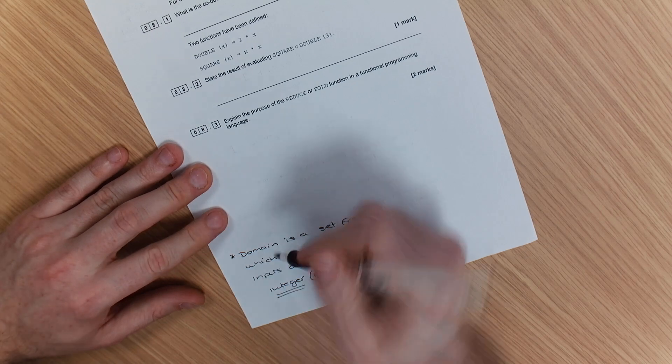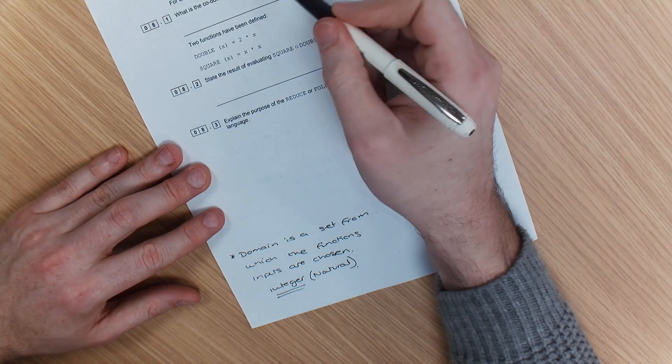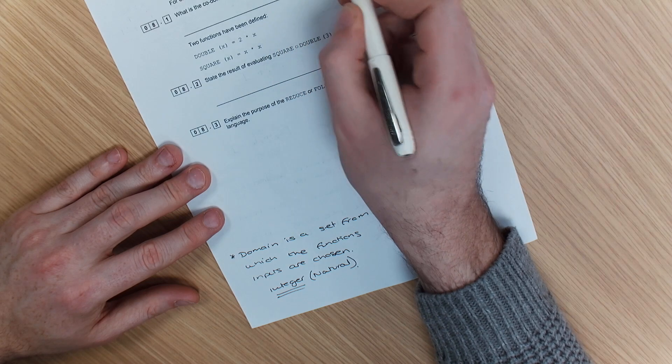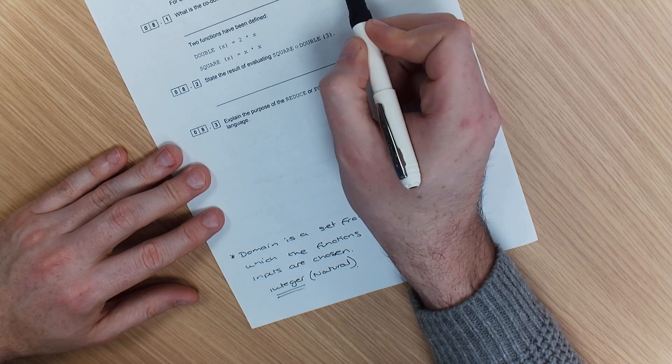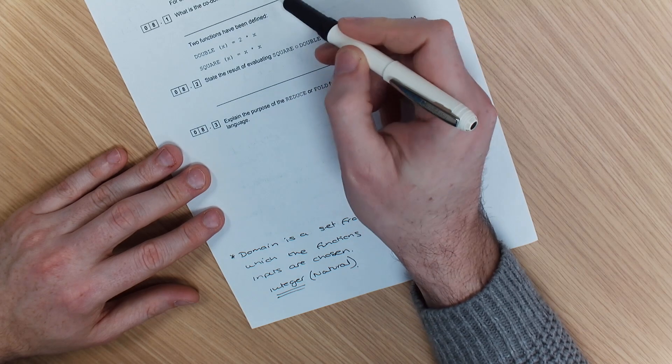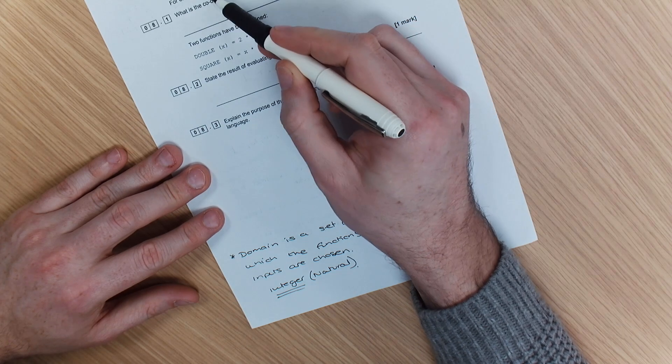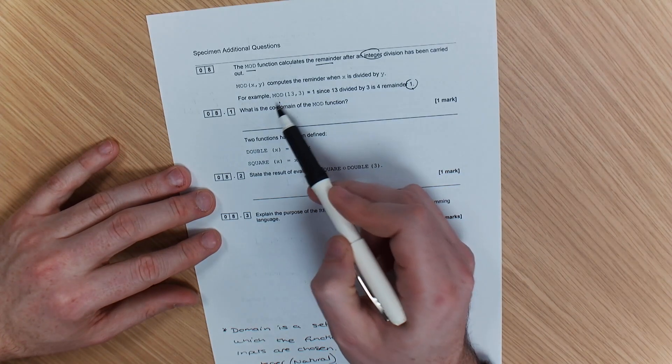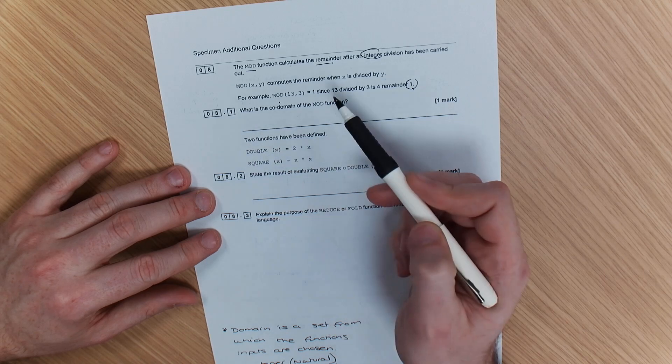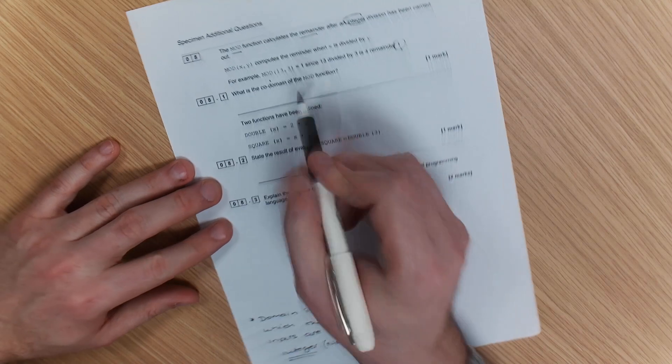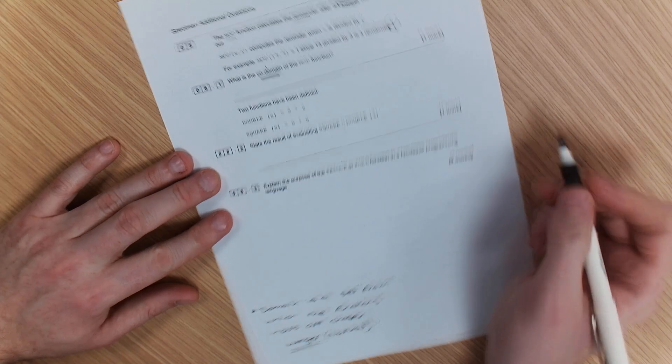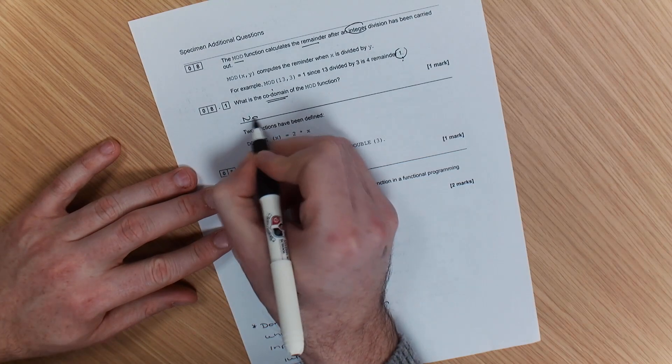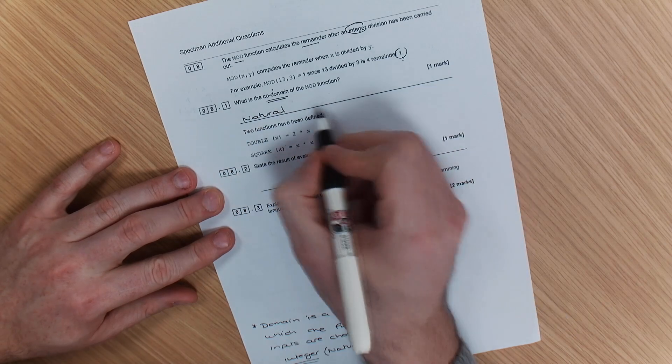So because the domain is natural, we're expecting the same, because it has said remainder after integer division has been carried out, and it's told us our number there. So realistically speaking, we know that mod is a function that gives us a whole number when it's output. Therefore, the data type for the co-domain as well, given that it's a whole number, would be natural numbers.